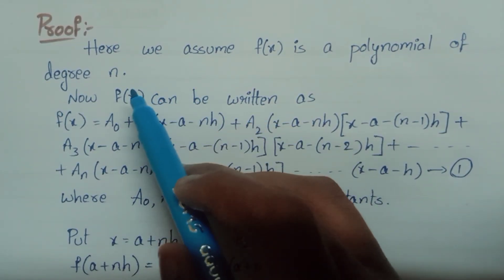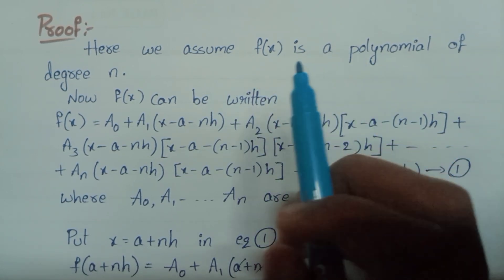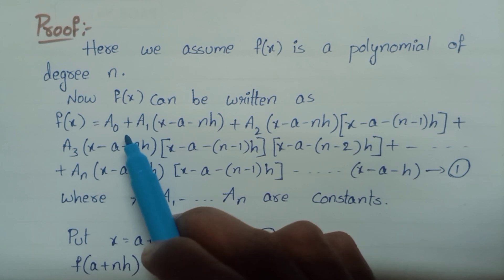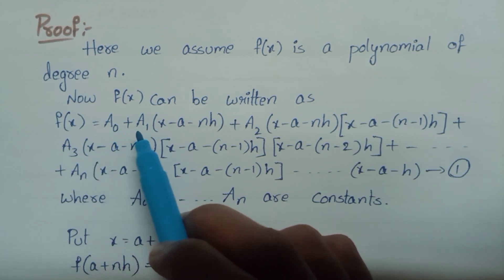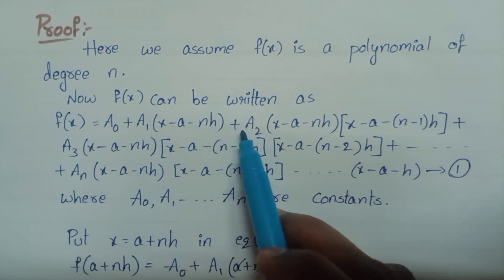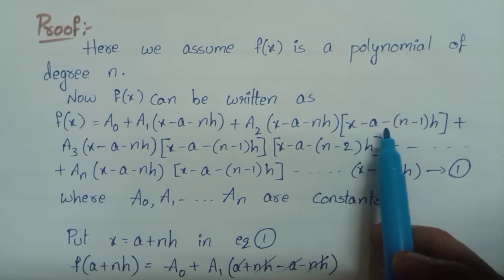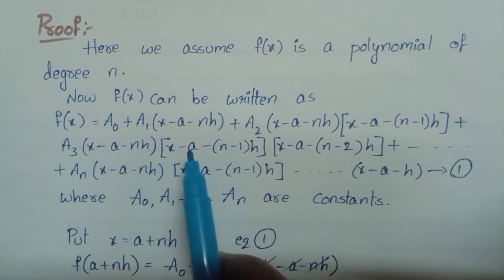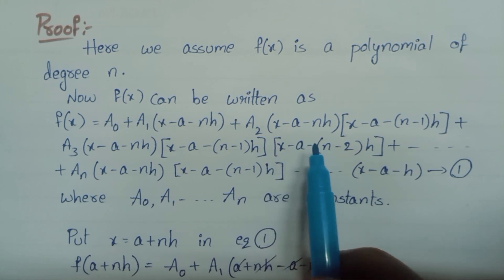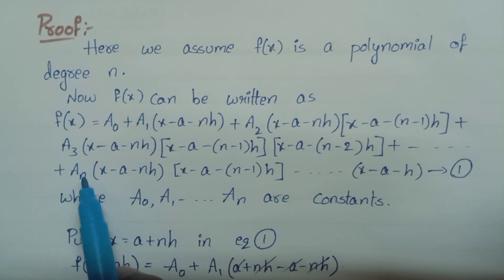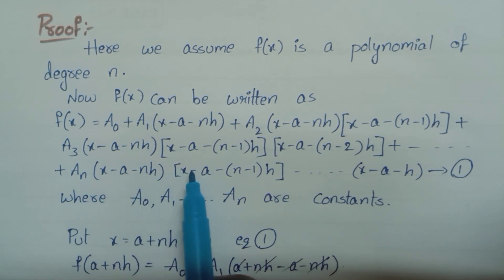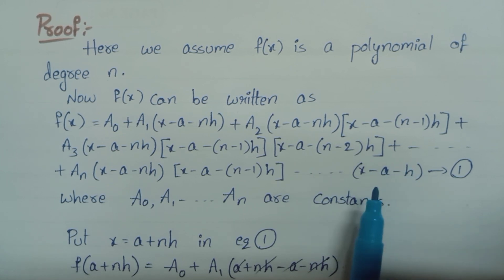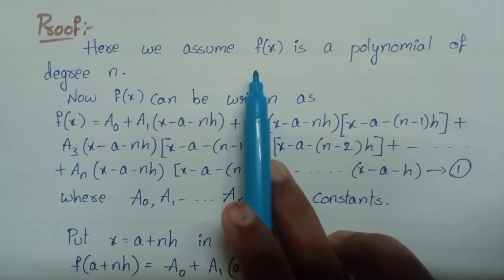Proof: Here we assume f of x is a polynomial of degree n. f(x) = a0 + a1(x − a − nh) + a2(x − a − nh)(x − a − (n−1)h) + a3(x − a − (n−1)h) + ... + an(x − a − nh)(x − a − (n−1)h)...( x − a − h), as a polynomial equation.